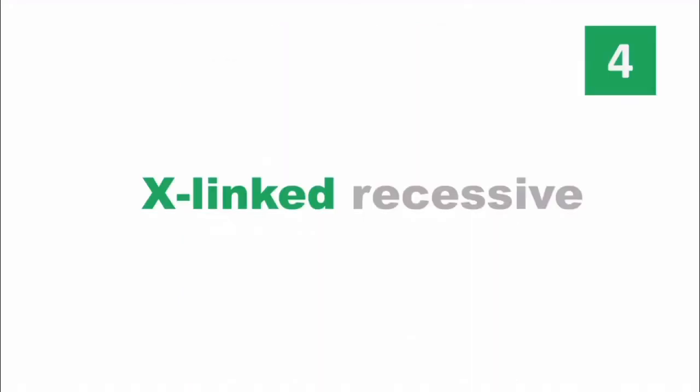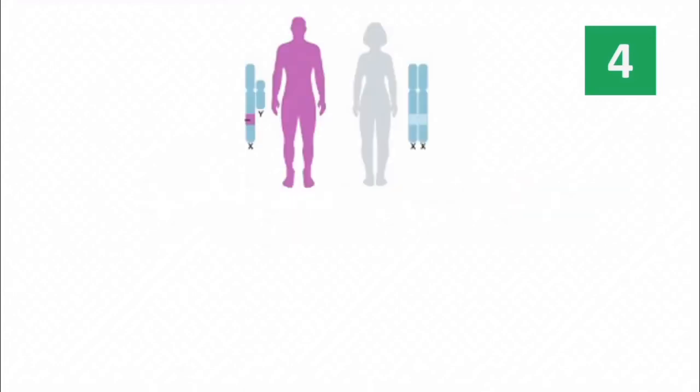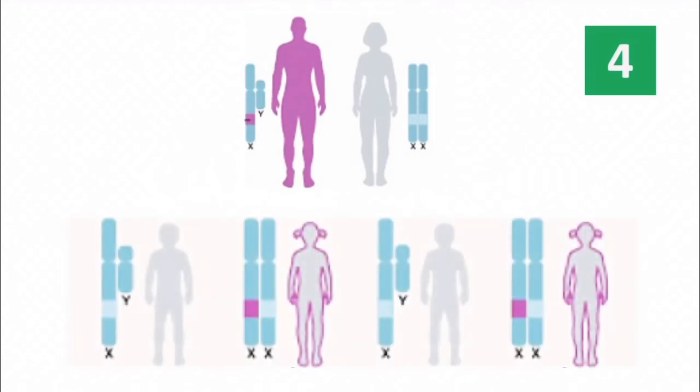Now, let's discuss our last category, X-linked recessive inheritance. It is very obvious that the mutation will be in the X chromosome and the gene will be recessive. If father has the mutation, what will happen to the offspring? We already know that sons do not receive any X chromosome from father. So, they will be healthy.